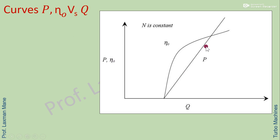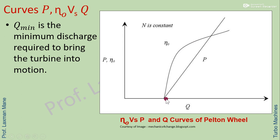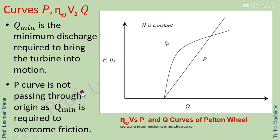In the operating characteristic curves, one curve shows shaft power and another shows overall efficiency. A minimum discharge Qmin is required to bring the turbine into motion and overcome friction, so the power curve does not pass through the origin — both curves start from a particular discharge value.